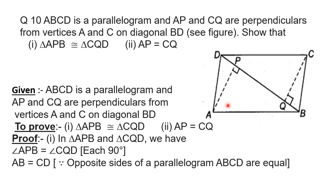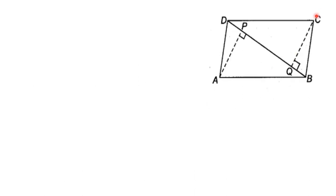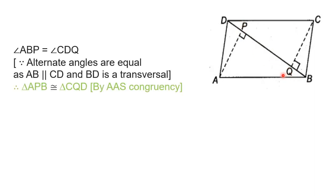For proving this, we take triangle APB and triangle DQC. In these two triangles, angle APB is equal to angle DQC — both are 90 degrees. Side AB is equal to side DC, as these are the opposite sides of the parallelogram, and opposite sides of a parallelogram are equal. Third, angle CDQ is equal to angle ABP, as AB is parallel to DC and DB is a transversal, so these two angles D and B are alternate interior angles.